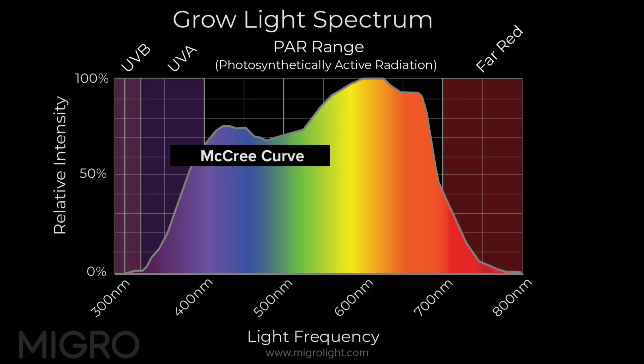The key takeaway is: just because we can mimic sunlight doesn't mean we should. It really comes back to PAR. A scientist called McCree developed the McCree curve, which is still used today. Experiments were done to look at the effect of different wavelengths of light on the rate of photosynthesis in plants, across a wide range of plants under different conditions. It was shown that the most photosynthesis happens in the PAR range between 400 and 700 nanometers, with a tail off on each end.